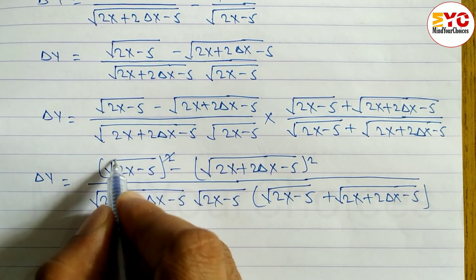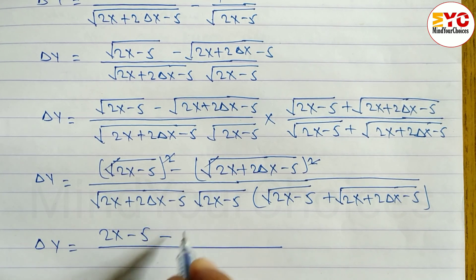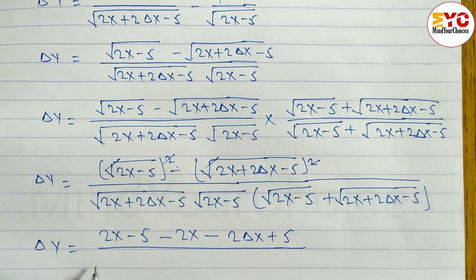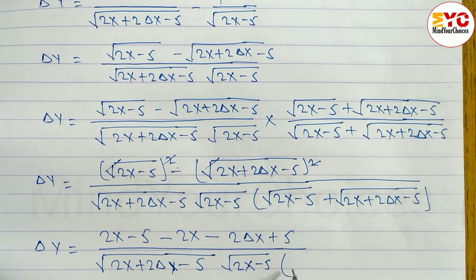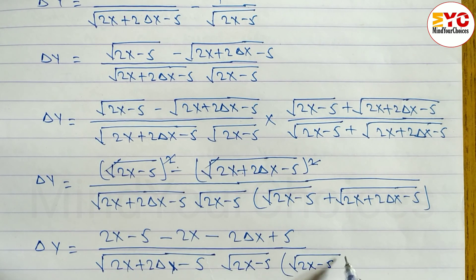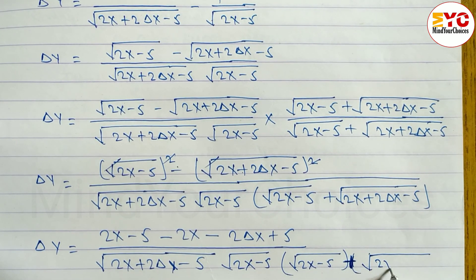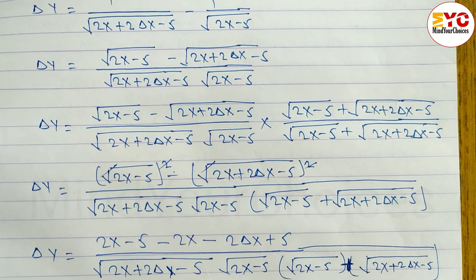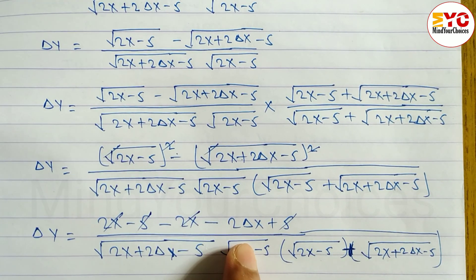The square and root cancel each other. So we can write: del y equals (2x - 5) minus (2x + 2 del x - 5) in the numerator. The denominator remains root under (2x + 2 del x - 5) times root under (2x - 5) times the bracket. After cancellation, positive 5 and negative 5 cancel, and 2x and 2x also cancel, leaving minus 2 del x in the numerator.